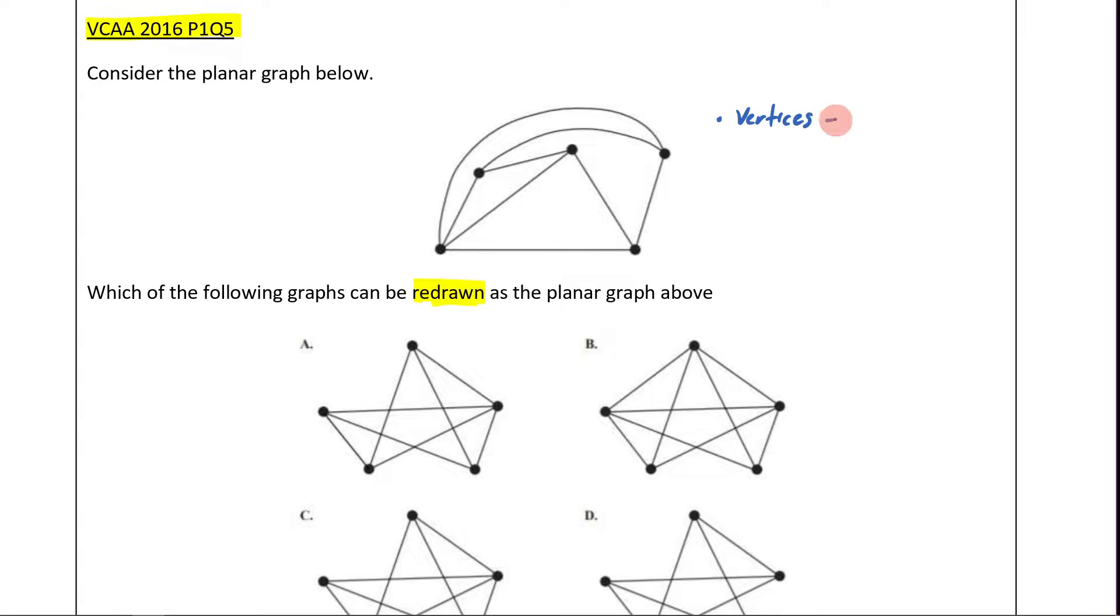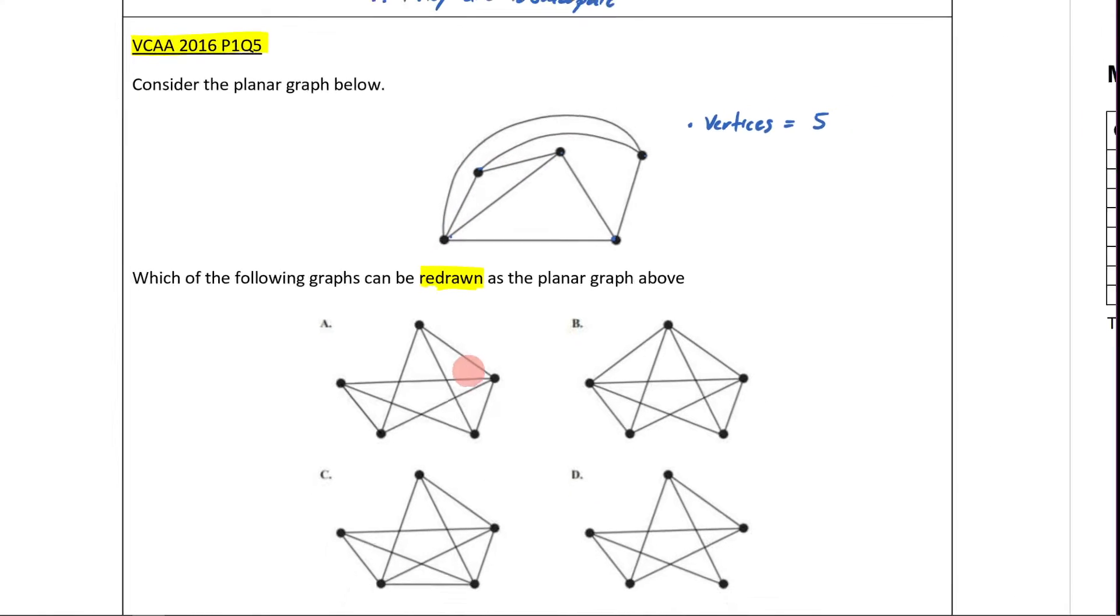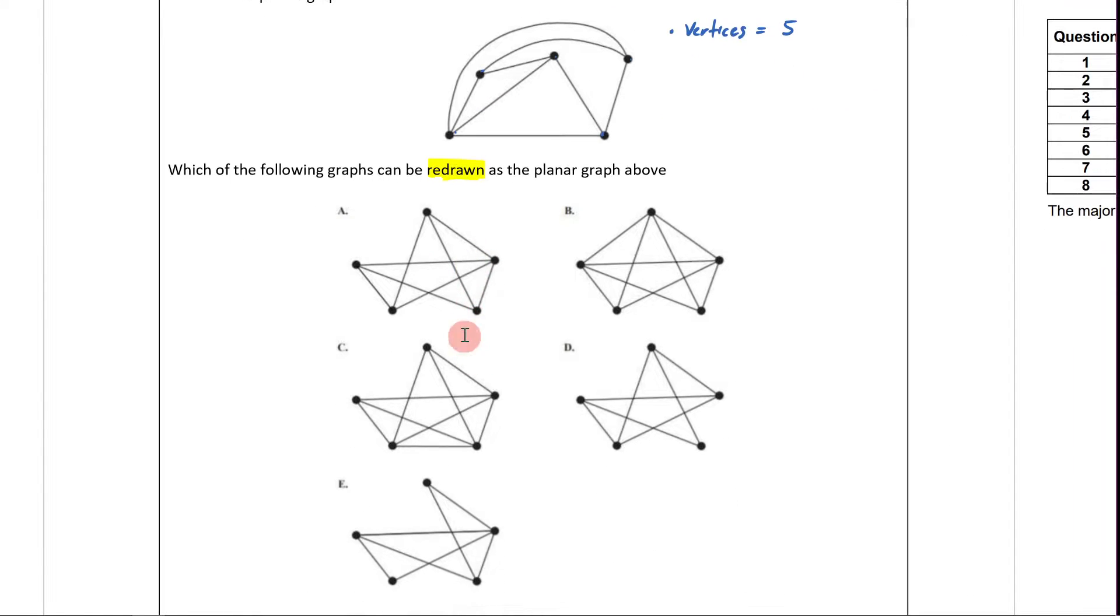Vertices. How many vertices does this have? 1, 2, 3, 4, 5. So now I can come down here. Which of these can I eliminate? 1, 2, 3, 4, 5. All of these have 5 vertices, don't they? So that is no help to me. All of these have 5 vertices.